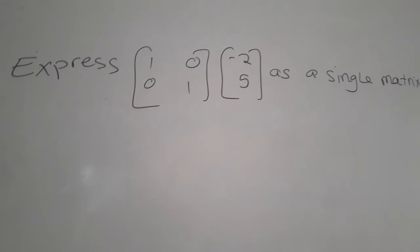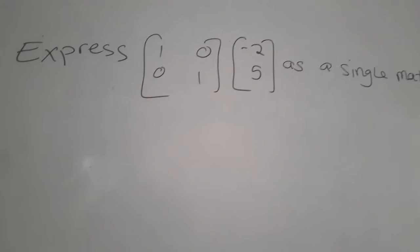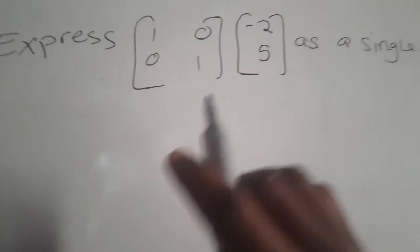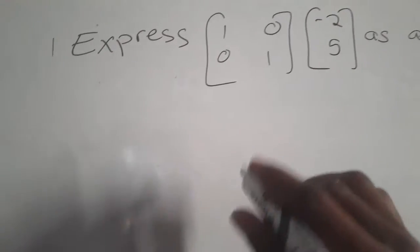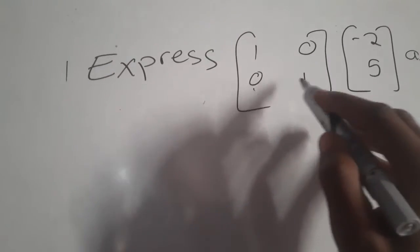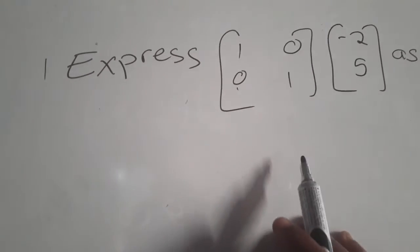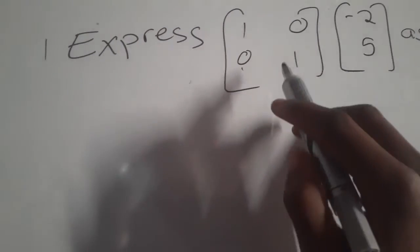How do we express this as a single matrix? I will show you how to do this as quick as possible. One thing you need to know is that you can multiply matrices if the number of columns in the first matrix is equal to the number of rows in the second matrix. So here we have two columns, then here we have two rows, so we can multiply this.